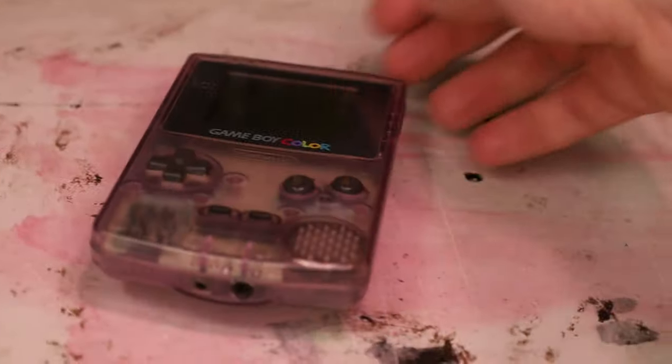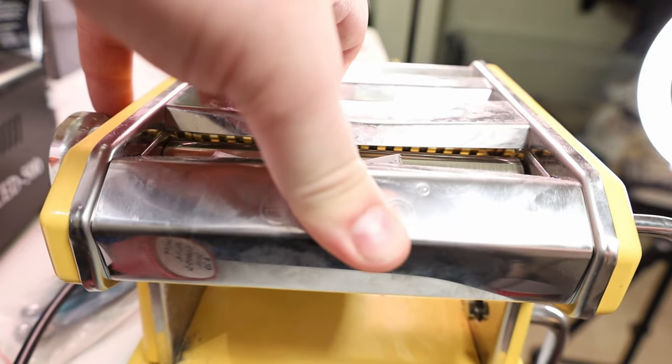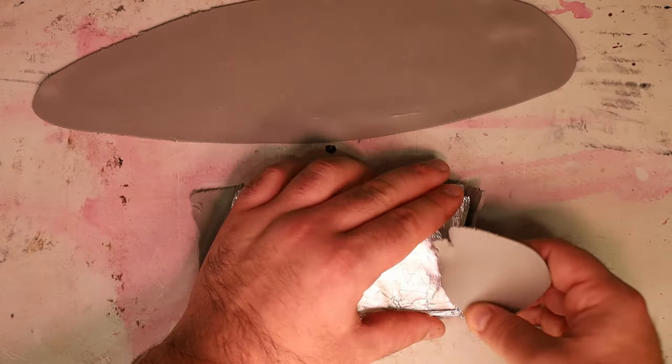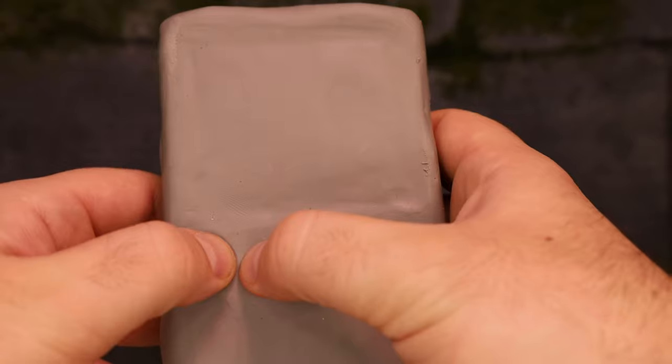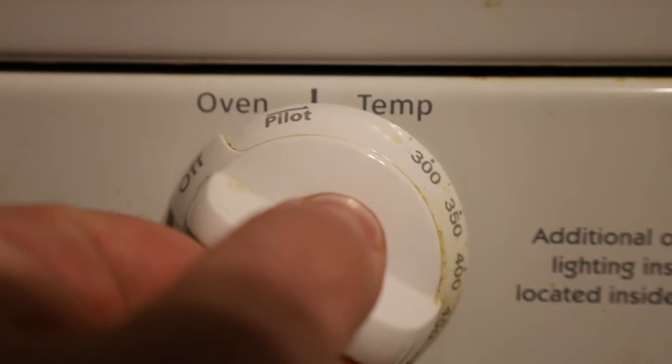I figured it'd be best to use the Game Boy itself to get the right shape, so I covered it in tin foil. I then chopped and conditioned some polymer clay and covered the foil with the clay, making sure I emphasized where the screen and buttons would go later, and then also shaping the clay around the cartridge on the back. Then I threw the whole thing in the oven.